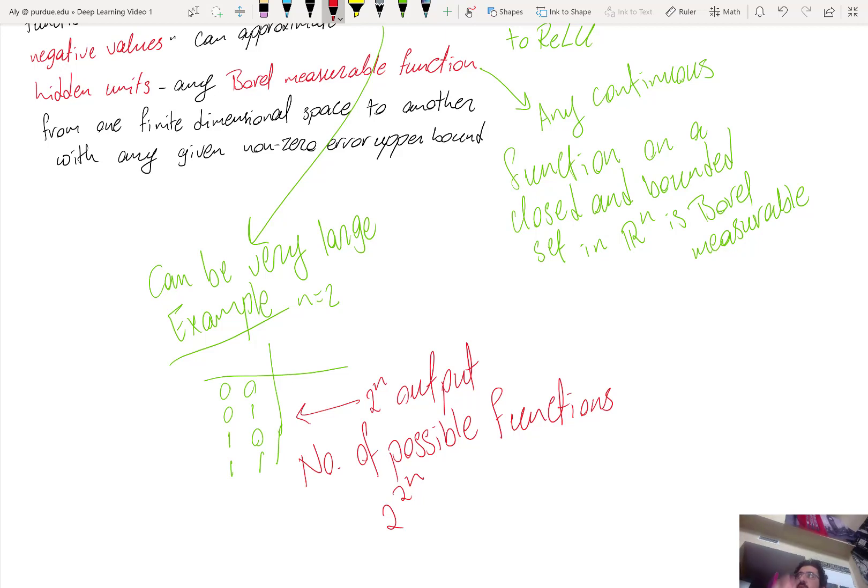So how many of these functions? So there are two to the n values to every function. Now, so these are the possibilities for every possibility of the input. What's the value of the output? How many of these functions are there? Basically, the truth table with four values. So if you have an output of length two to the n, then there can be two to that value. Possible outputs.